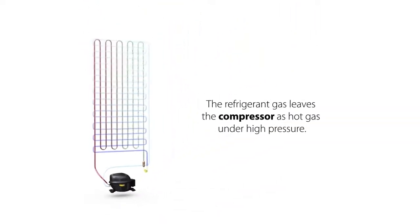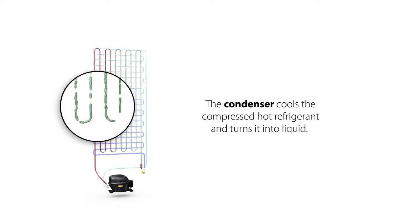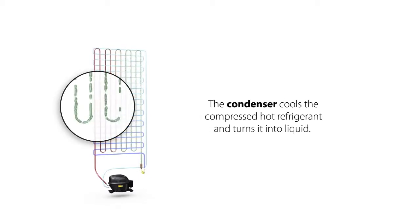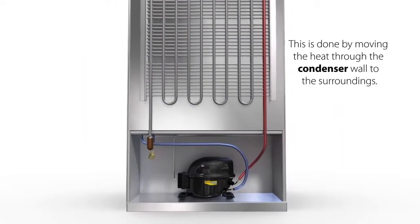The refrigerant gas leaves the compressor as hot gas under high pressure. The condenser cools the compressed hot refrigerant and turns it into liquid. This is done by moving the heat through the condenser wall to the surroundings.